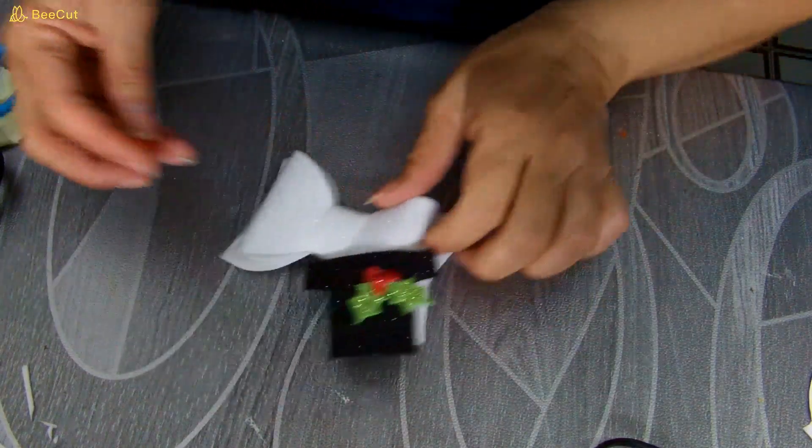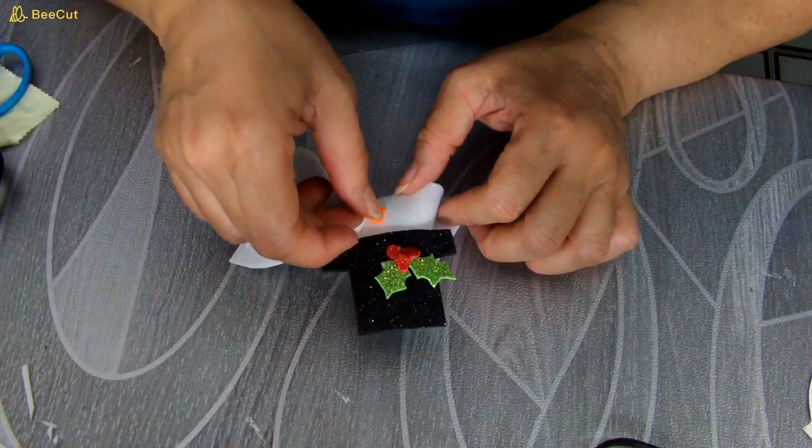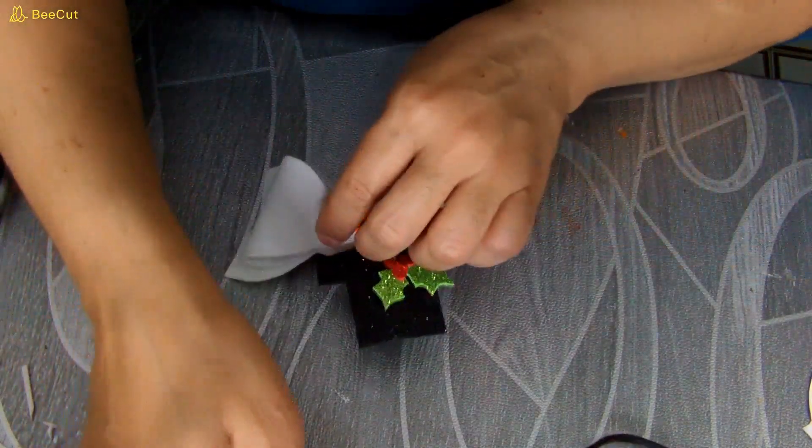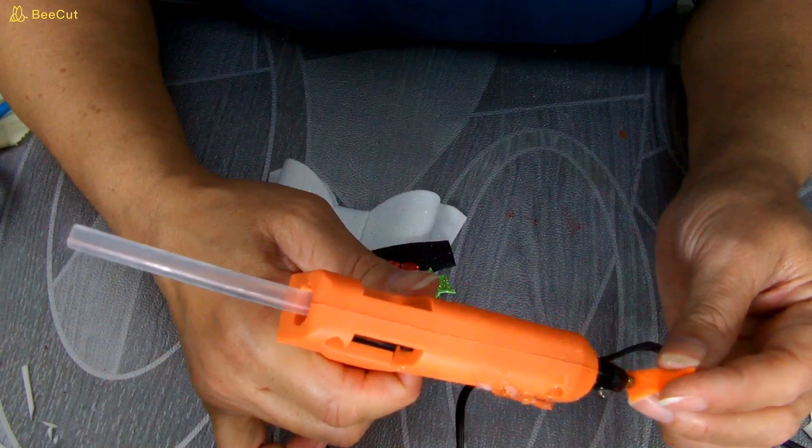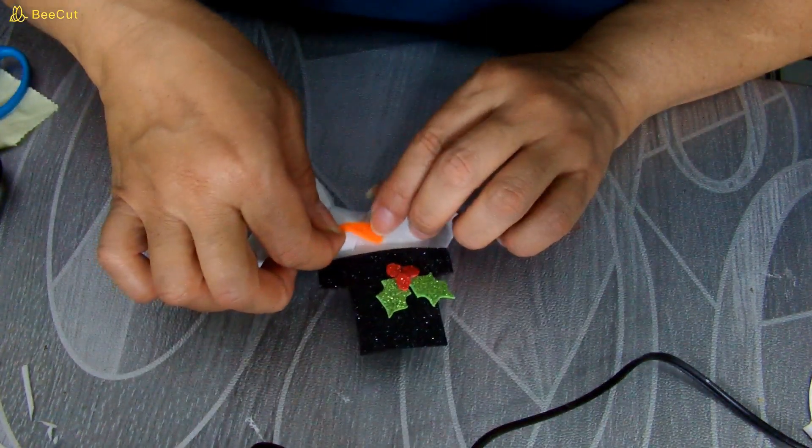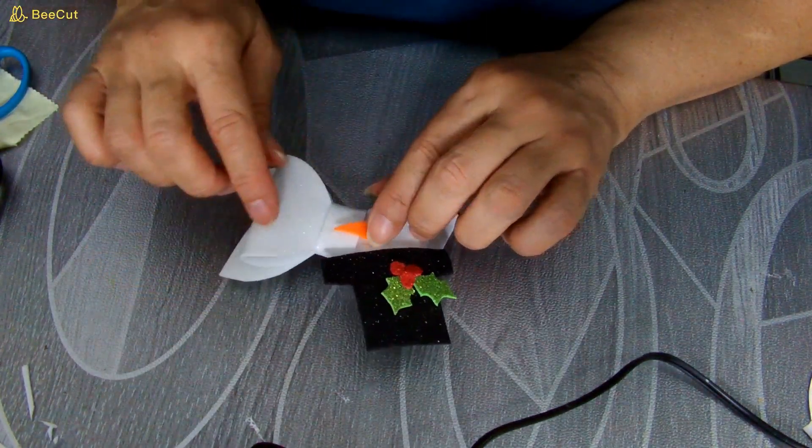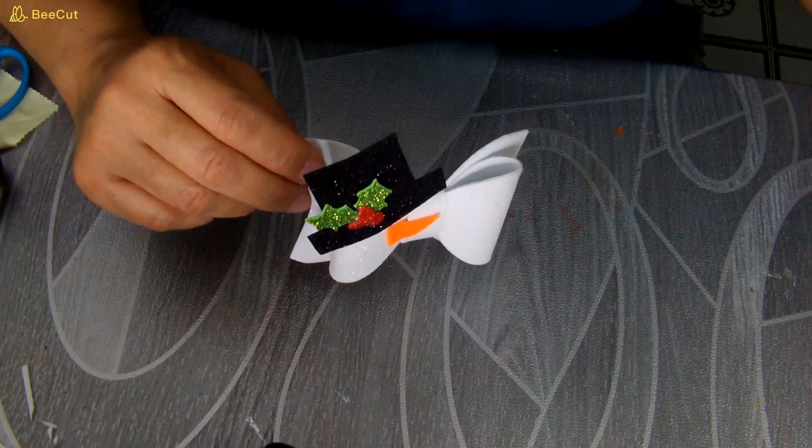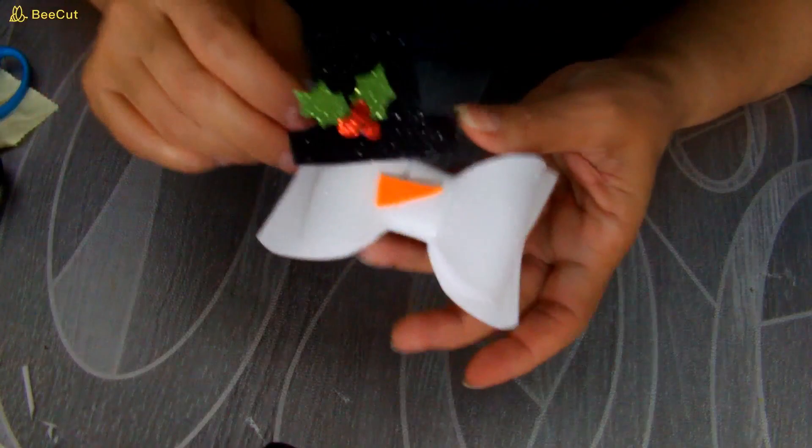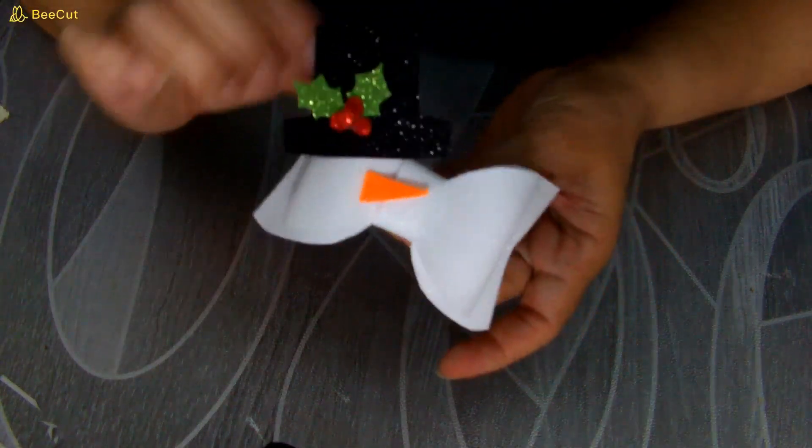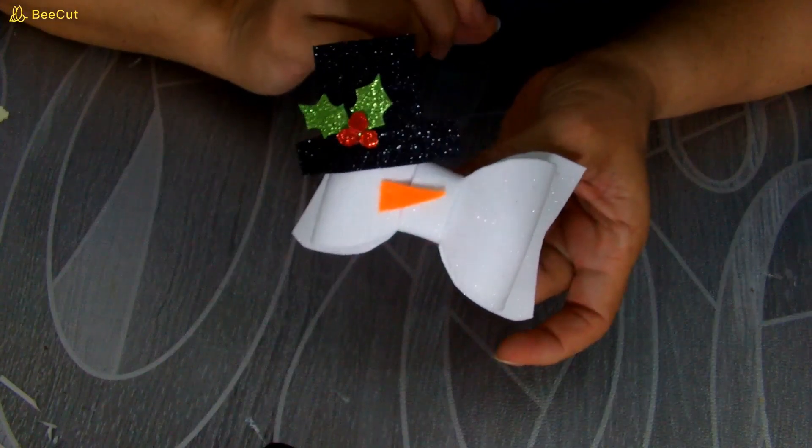Y eso simplemente se lo voy a estar poniendo por acá al lazo. Voy a poner un poquito de silicón en el triangulito que acabo de cortar. Y lo voy a poner así ahí. Y listo. Y miren qué precioso queda, hermoso ese lazo así como el muñeco de nieve. Me encantó, está muy bonito.